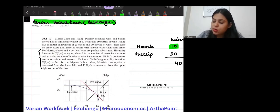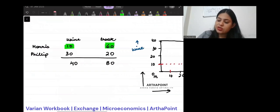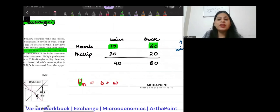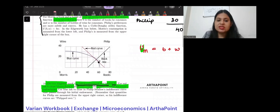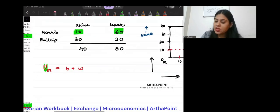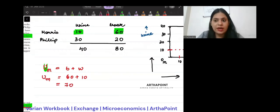It is given to me that for Morris, a book and bottle are perfect substitutes. His utility function is U(B,W) is equal to B plus W. Now it wants that you should pass this through his endowment. What was the endowment of Morris? 10 and 60. So, 60 units of book and 10 units of wine. So, what will be his utility? It will be 70.